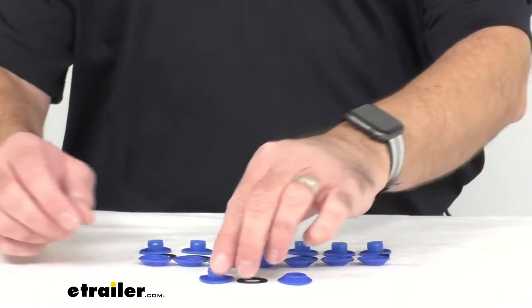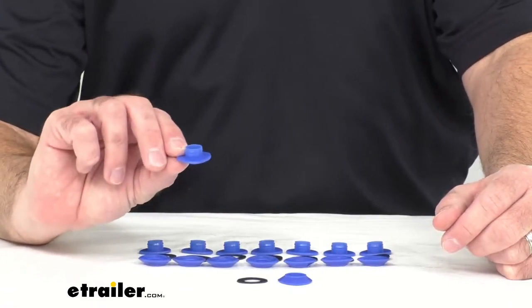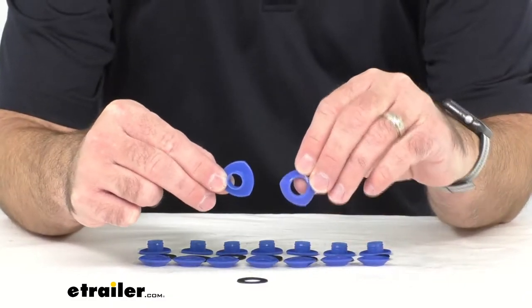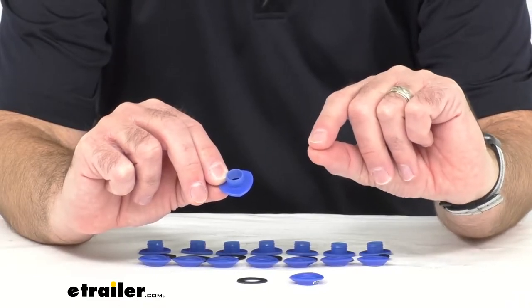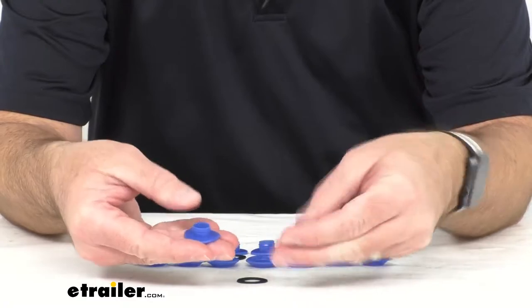Now, these grommets are going to be self-piercing so there's going to be no need to pre-cut a hole before installing. And for plastic ground sheets or tarps, you would just fold that material to give it a double thickness and then for the grommets you would just separate each half of the grommet.